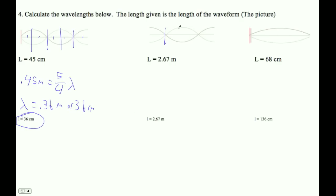This one is one, two, three, four quarter wavelengths. So 2.67 is the whole wave. Therefore, the wavelength is 2.67, not too surprisingly, meters.